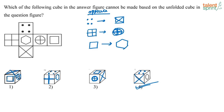These questions are from the topic cubes and dice. The best way is to eliminate the options — there is no other way to solve such questions. You have to imagine first. Write down the opposite sides, then it is very easy to solve. Otherwise, at every step you have to keep imagining which is very difficult. Once you know the opposite sides, you know that all the other faces are adjacent, and you can start eliminating options to speed up your time.